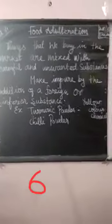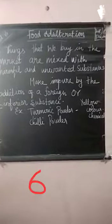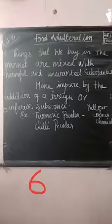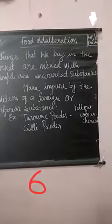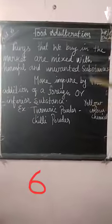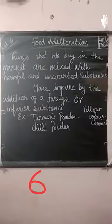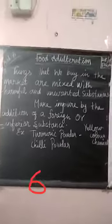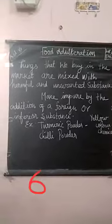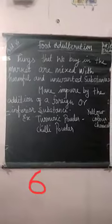The things we are buying from the market are not pure — they are mixed with harmful and unwanted substances. Those unwanted substances make the product impure by the addition of a foreign or inferior substance. That foreign or inferior substance is said to be an adulterant. This is said to be food adulteration.